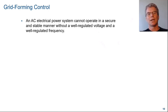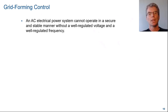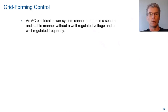The bottom line is that an AC electrical power system cannot operate in a secure and stable manner without a well-regulated voltage and a well-regulated frequency. When we've established appropriate grid voltage and frequency, we say the grid is formed.